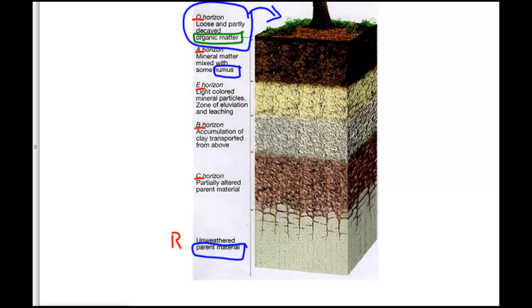That leaf layer eventually is going to start to decompose. It will probably shrink in size as the organic matter is decomposed. It can change throughout the year. But that top layer is the O layer or the organic layer.